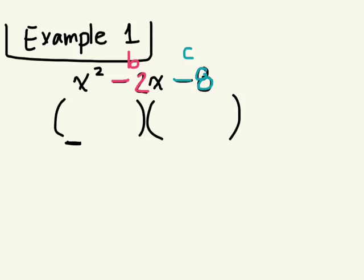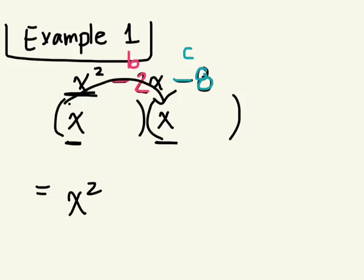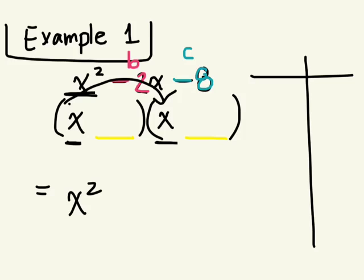What do you think the first two terms are going to be based on what the first term is? What's the square root of X squared? X times X — when I FOIL this to check, it's going to bring me back to X squared. So I know that the first two terms are going to be X times X. We have to figure out the two factors. I'm going to draw a little chart here — this will help you.